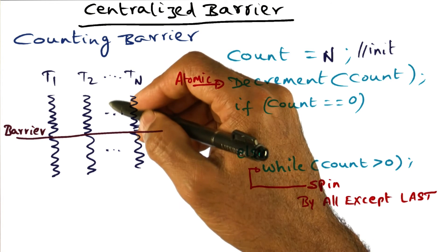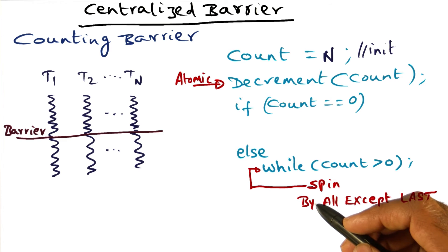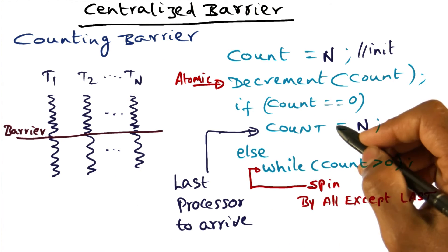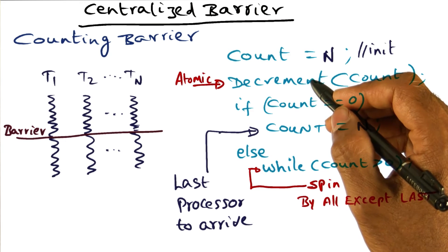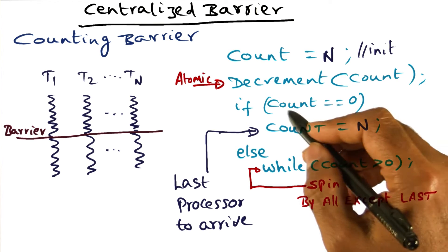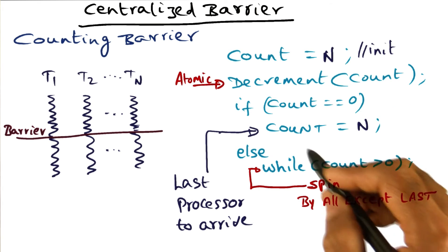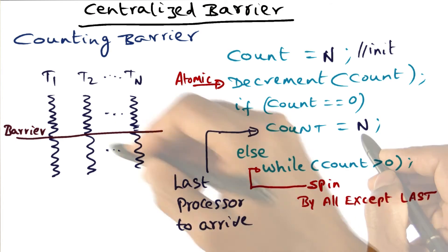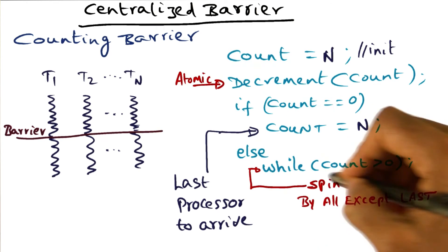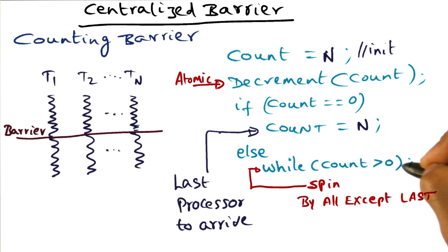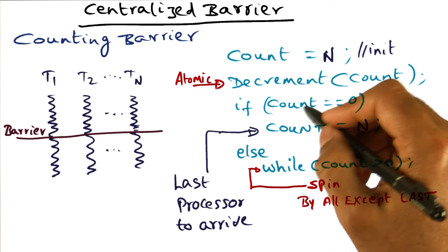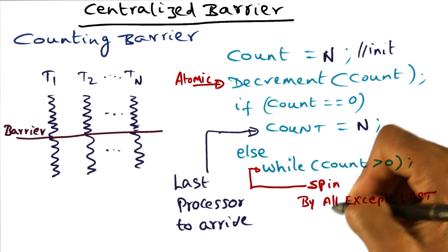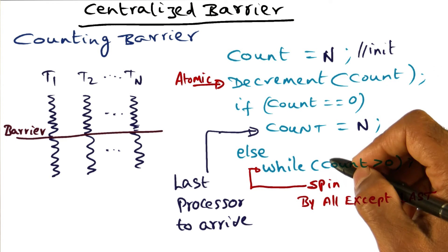Now the last processor, the straggler—maybe T2 is the straggler. The straggler arrives eventually, and when he arrives, he's going to decrement also. When he decrements the count, he'll see that the count has become zero. So what he will do is reset the count back up to N. That is indication that everybody—all of these guys are waiting on count being greater than zero—so as soon as the count becomes zero, they can be released from the barrier.